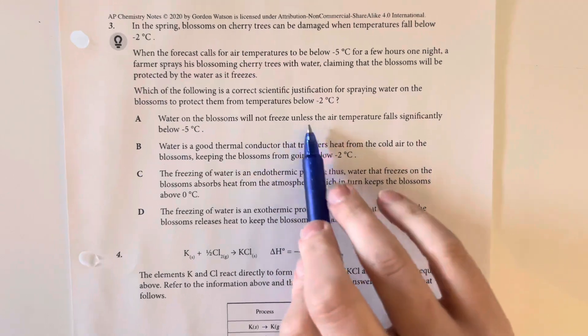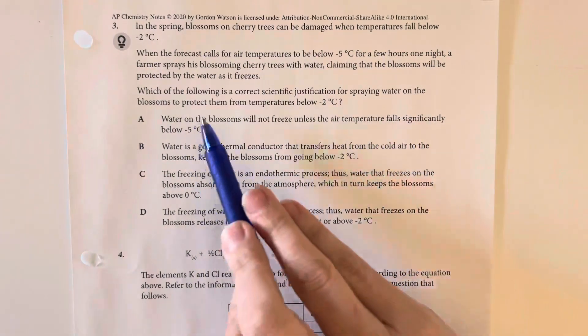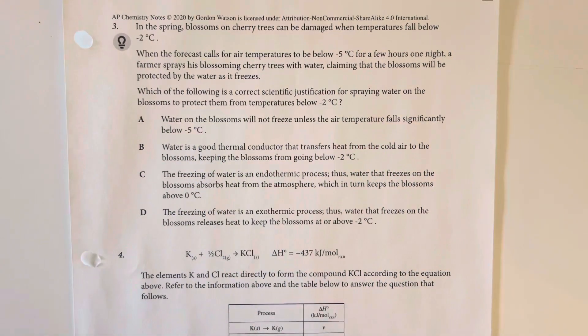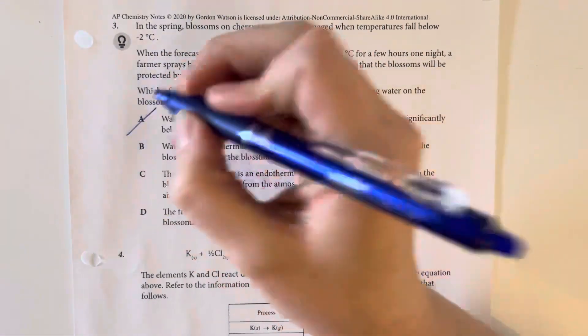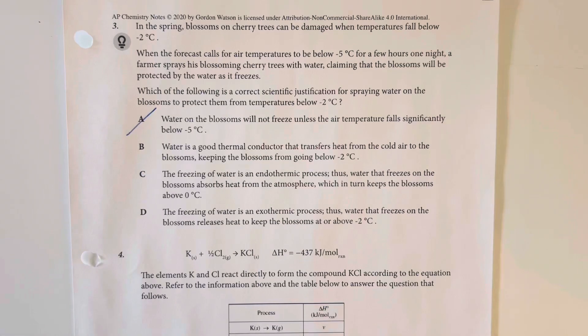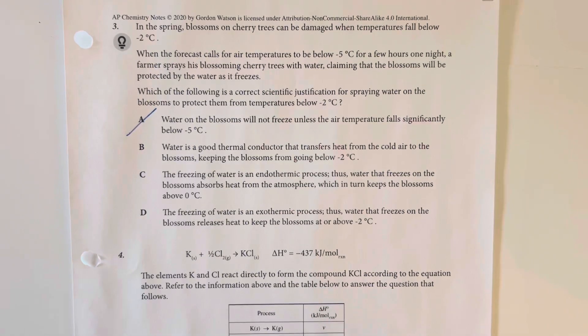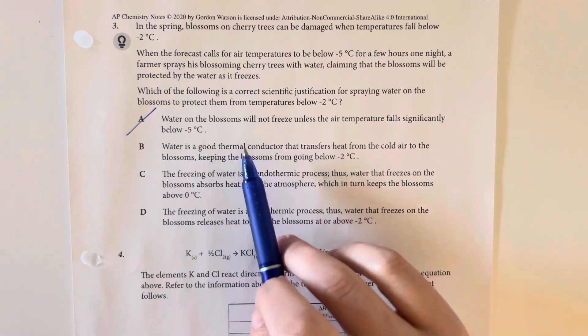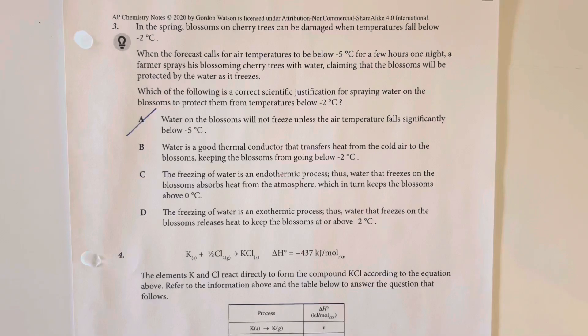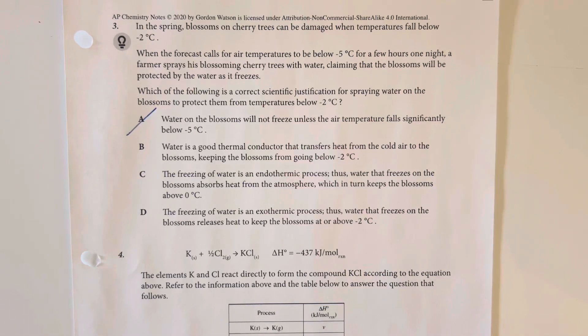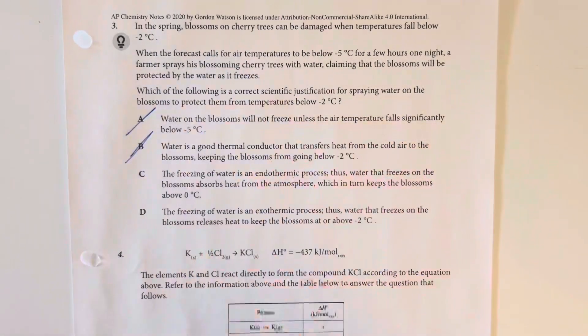Water on the blossoms will not freeze unless the air temperature falls significantly below negative five degrees Celsius. So the freezing temperature of water is zero degrees Celsius, so that is not going to be the case. Water is a good thermal conductor that transfers heat from cold air to the blossoms, keeping the blossoms from going below negative two. If it was a good thermal conductor, that means that it is going to transfer the heat very well and very efficiently, which means that the blossoms would feel colder than just the air. So that does not make any sense.